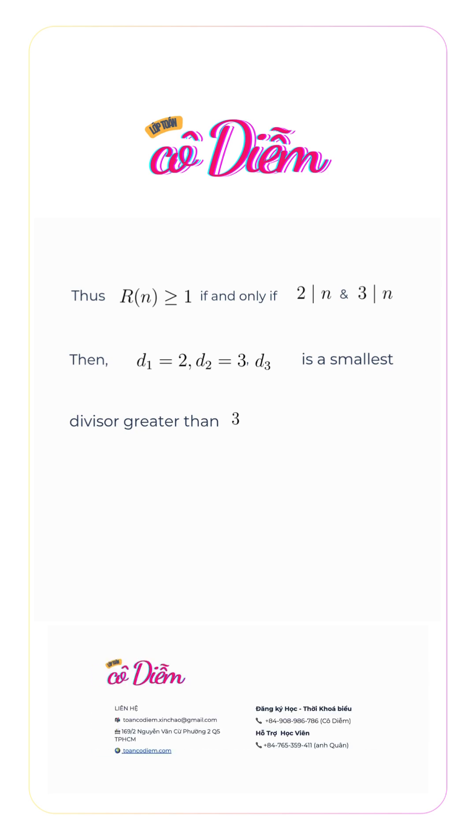we must have 2|n and 3|n. Then d_1 = 2, d_2 = 3, and d_3 is the smallest divisor greater than 3. There are three cases.